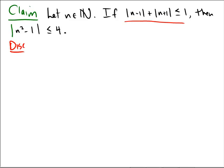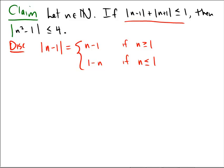So we have the absolute value of n minus 1. Recall that the absolute value of n minus 1 is going to equal n minus 1 if n is greater than or equal to 1, and it equals 1 minus n if n is less than or equal to 1. It's either the expression itself or its opposite, based on whether it's positive or negative.